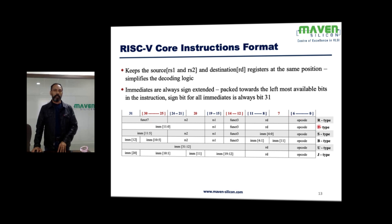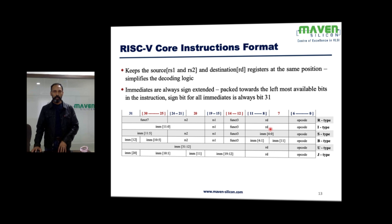For I-type, the only difference is we use a constant instead of RS2. So the operation will always be performed between source register RS1 and the constant defined by 12 bits — that's why it's called immediate type. Funct3 defines the operation to be performed, similar to R-type, and the result will be stored in the destination register. We need to extend this constant to 32 bits because RS1 holds a 32-bit value.